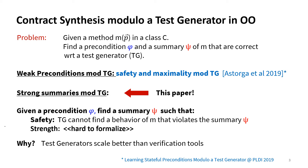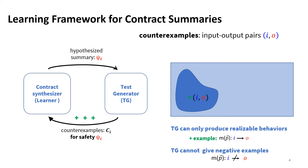The reason we guarantee correctness with respect to a test terminator as opposed to a verifier is that test terminators scale much better than verification tools. This is the learning framework that we use. We have a contract synthesis engine, which we call a learner, that learns summaries given a set of concrete behaviors. We send such contracts to the test terminator, which checks for safety and returns behaviors that are not covered by the current contract. In terms of learning, we can see these behaviors as positively labeled examples that a contract must include.